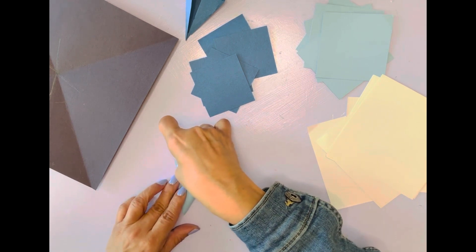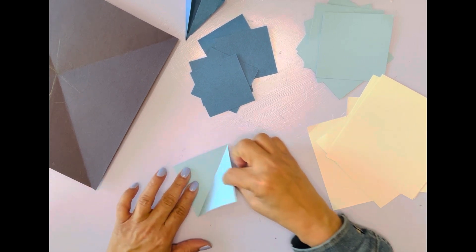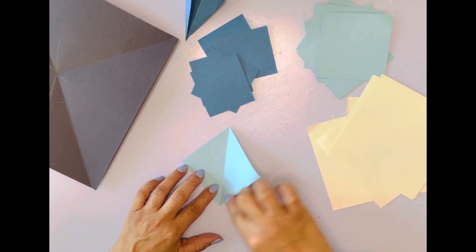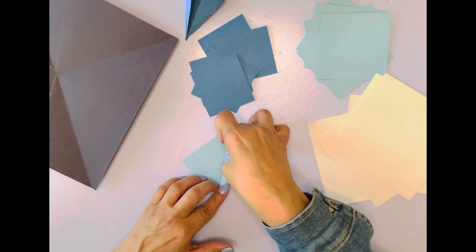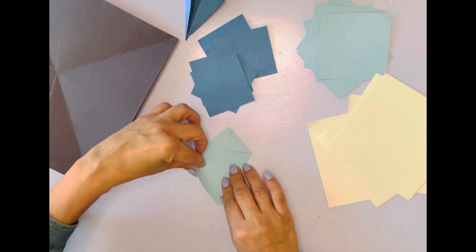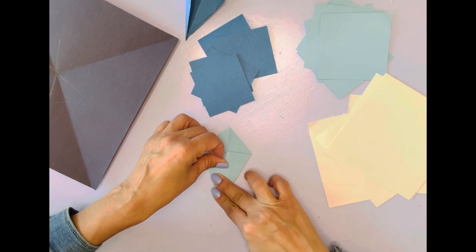Okay, then I fold it over, press, open it up, then fold inward. Do the same thing on the other side. And that's how you create an origami kite.